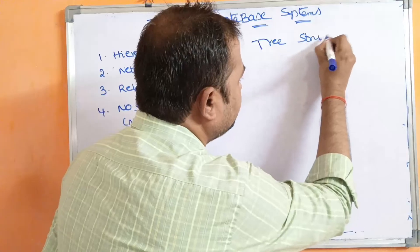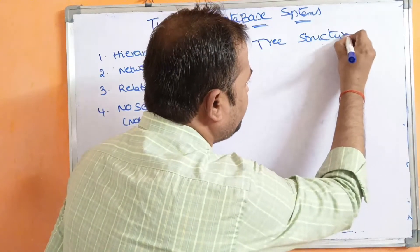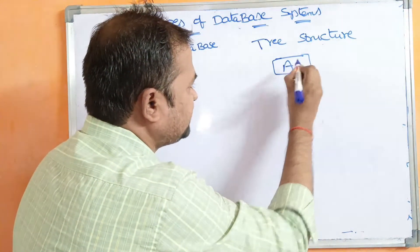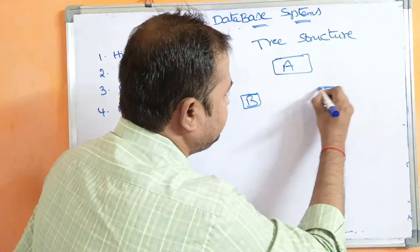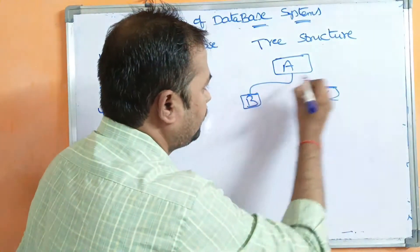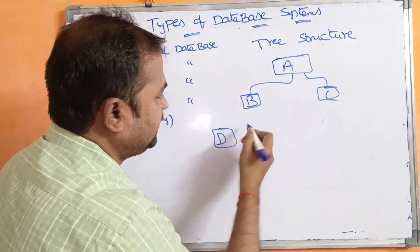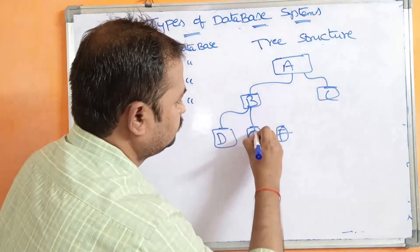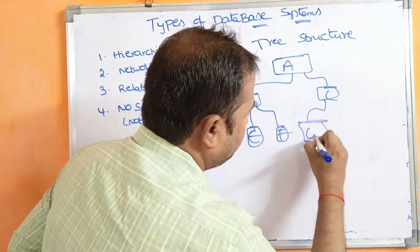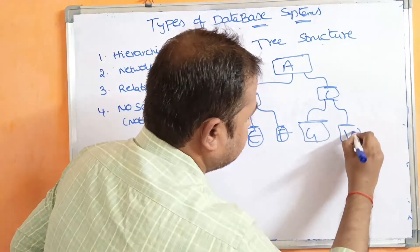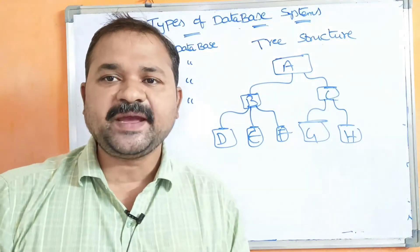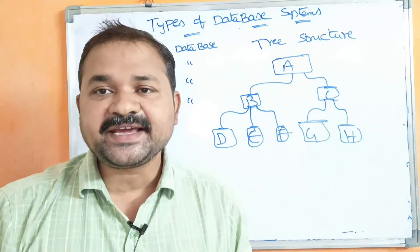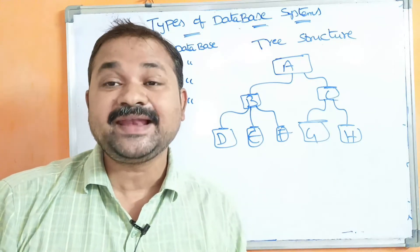A tree is a collection of nodes. Trees are mainly useful in order to represent hierarchical information, which means level by level information.